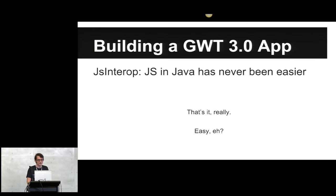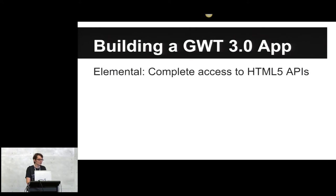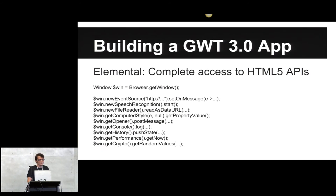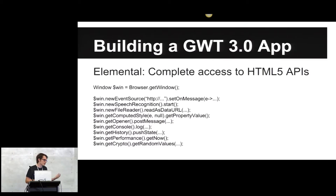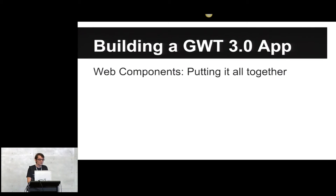Elemental, which Ray Cromwell also mentioned in the keynote, is just automatically generated HTML5 APIs. Whatever the WebKit or W3C has in the spec gets generated into Java interfaces, currently with JavaScript objects backing them, but in the future it'll just be JS Interop and pure interfaces for you. If you wanted to implement a JavaFX element that works as a replacement for a GWT DOM element, you can, and then port your entire web application to desktop. With the work going into JavaFX, that might be more useful than you know in about a year or two.